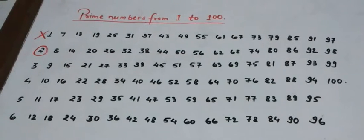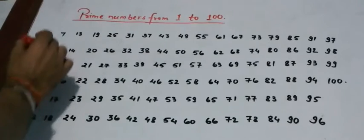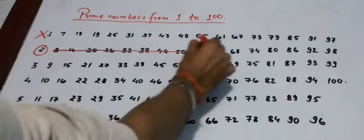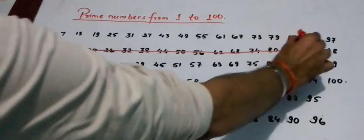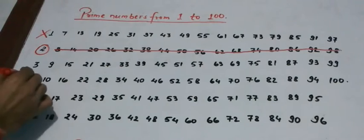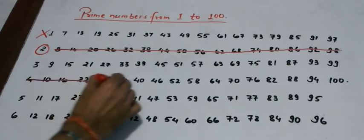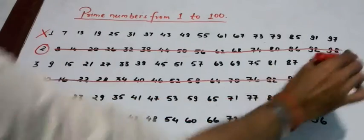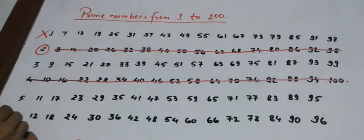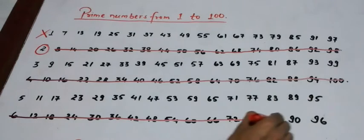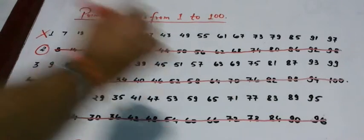In the first step, we cancel out all the even numbers except 2. This is what we do. These are the other even numbers and again, these are another list of even numbers.